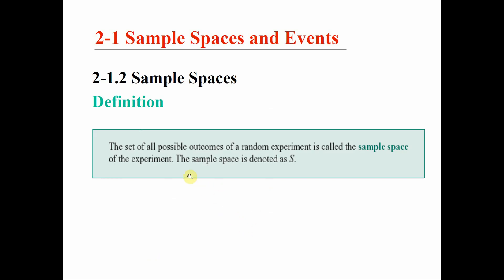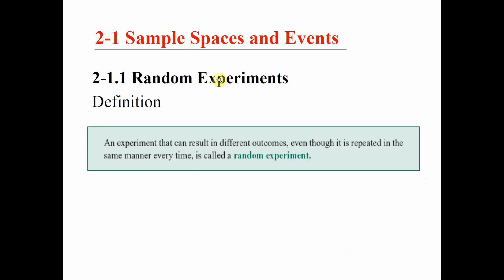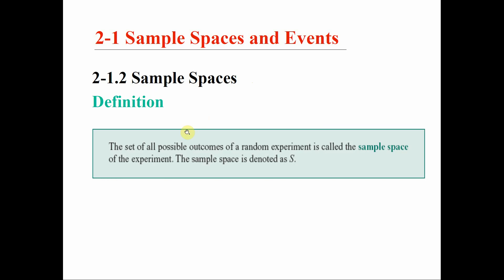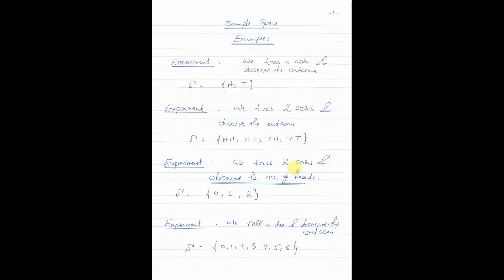We are using these examples as motivation to the course. Let's continue with our second important definition: the sample space. We defined the random experiment as an experiment where the outcome is uncertain and not known in advance. Now, if we have a random experiment, the set of all possible outcomes of the experiment is known in advance — and this is what we call the sample space. Usually we use the letter S to denote the sample space.